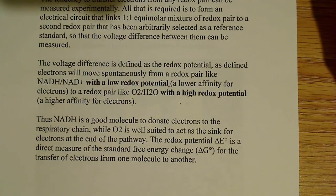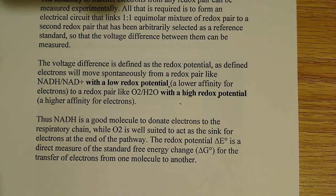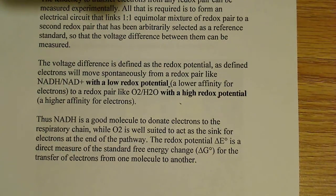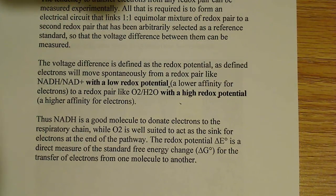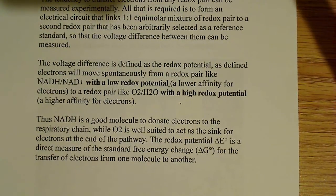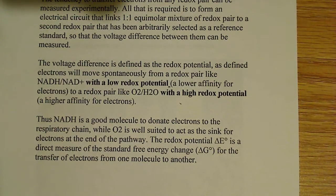NADH donates its electrons to that first respiratory complex — complex 1 — and in doing so it has to give them up pretty easily; it doesn't want to hold on to them too tightly. At the end of the electron transport chain, at the fourth respiratory complex, it's oxygen that takes up the electrons. Oxygen is extremely electronegative — it's the second most electronegative atom — so it desperately wants to hold on to the electrons, which is why it has a very high redox potential and a higher affinity for electrons.